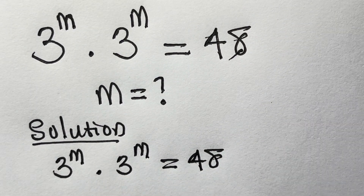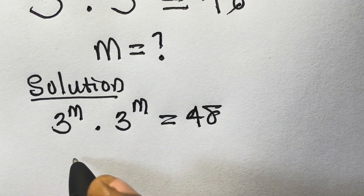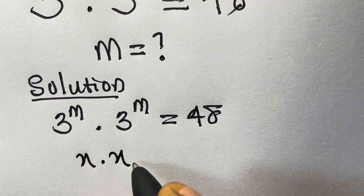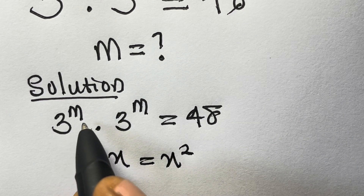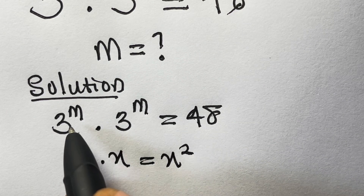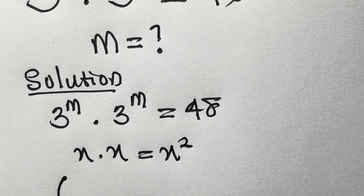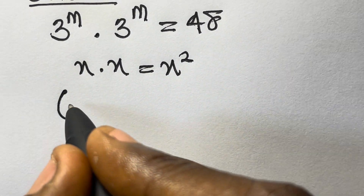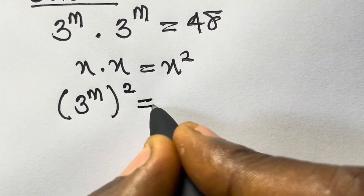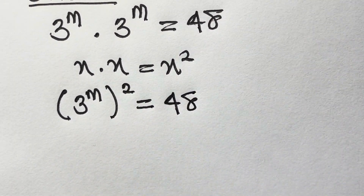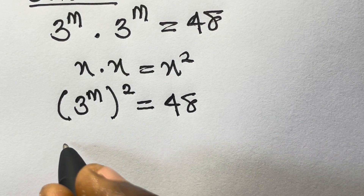Let's remember that if we have x times x, this equals x squared. So if we multiply 3 raised to power m times 3 raised to power m, we get 3 raised to power m, all squared. So we have 3 raised to power m, then squared, equals 48.